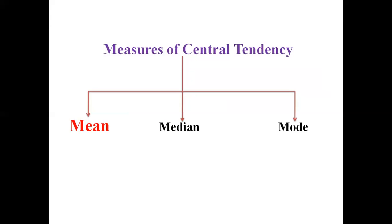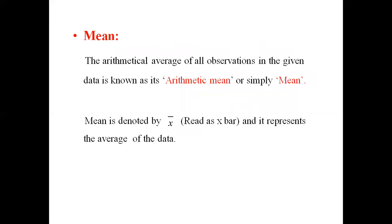The next topic is measures of central tendency. The measures of central tendency are mean, median, and mode. But in this video, we are going to concentrate on mean. The mean is the arithmetical average of all the observations in the given data, known as its arithmetic mean or simply mean. This mean is denoted by x̄ and it represents the average of the data.